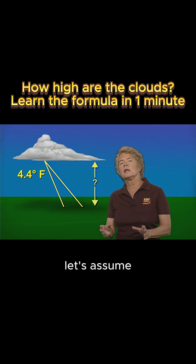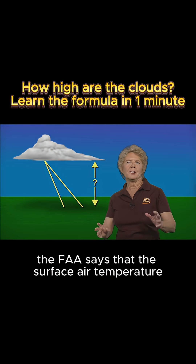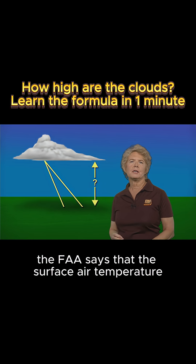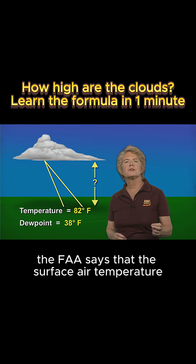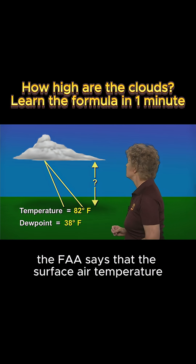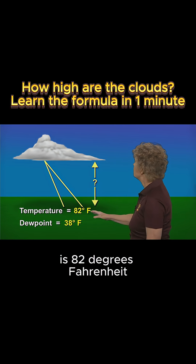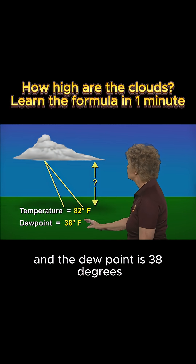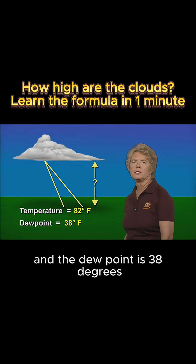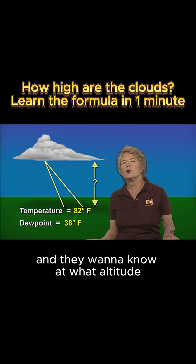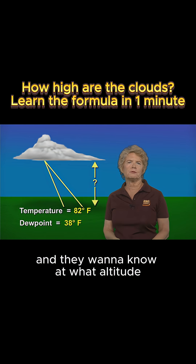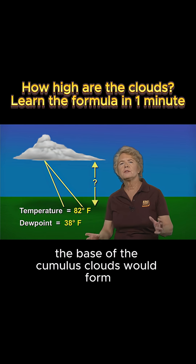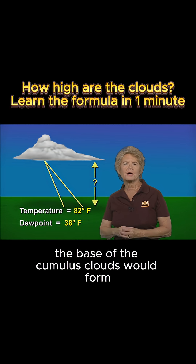Here's an example. Let's assume the FAA says that the surface air temperature is 82 degrees Fahrenheit and the dew point is 38 degrees, and they want to know at what altitude the base of the cumulus clouds would form.